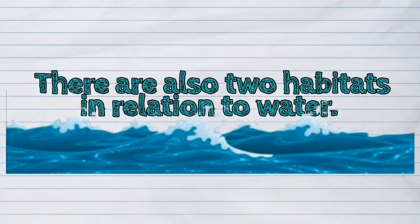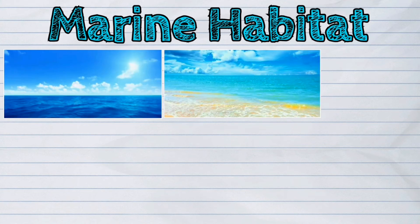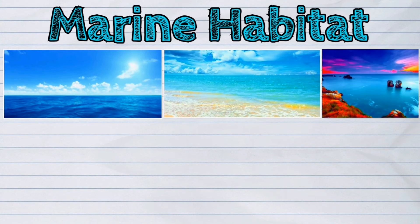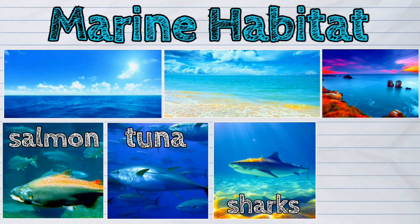There are also two habitats in relation to water. The first one is the marine habitat. It pertains to the largest portion of Earth's water bodies including oceans, seas, and other saltwater regions. Different kinds of fishes found in a marine habitat include salmon, tuna, sharks, and mackerel.